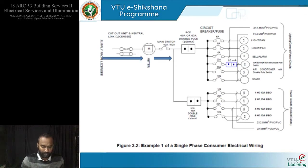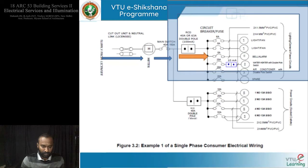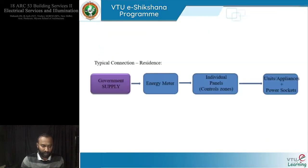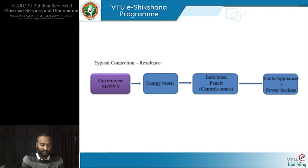The strategy is to have all the fixed appliances in one board and all the plug-in appliances in another distribution panel with different circuit breakers. This is the lighting power circuit, whereas here it becomes socket outlets at 13 amps. In the next slide, I will tell you about typical connection.